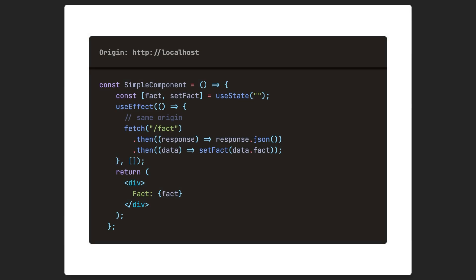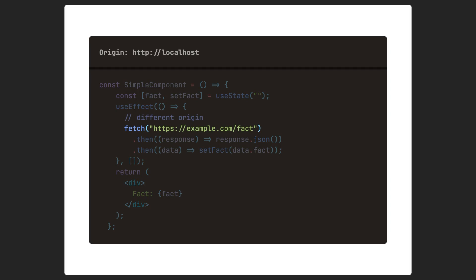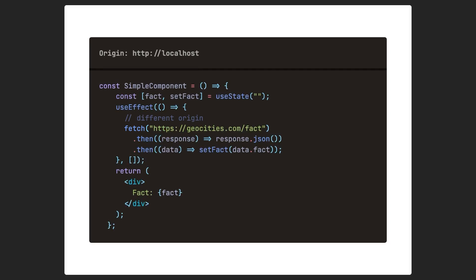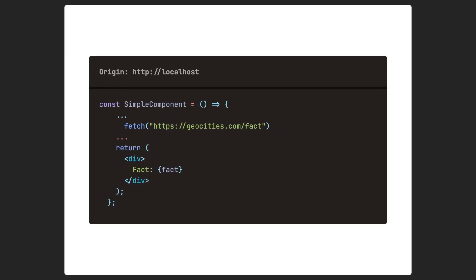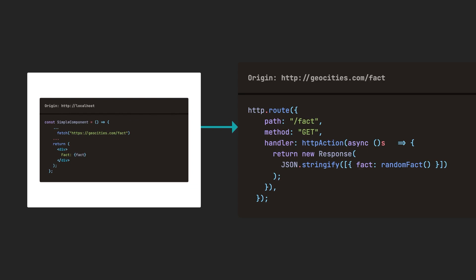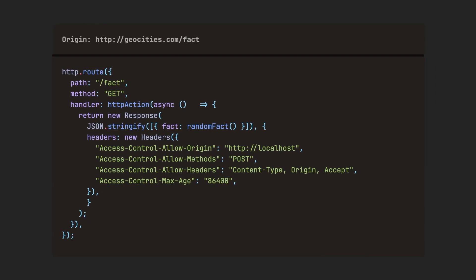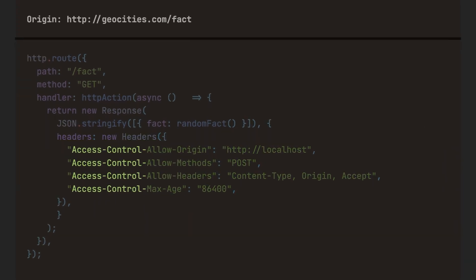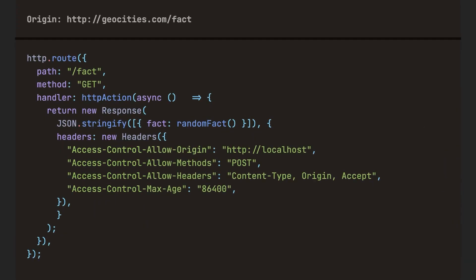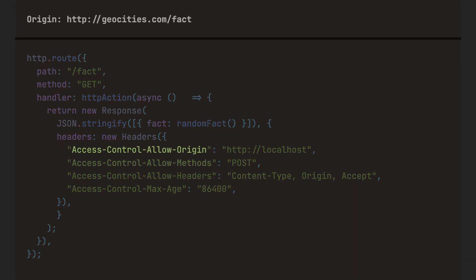The short version of CORS is that when browser-based JavaScript makes a fetch request to another origin, the server on the other end needs to let the browser know that this request is A-OK. The server does that by providing headers specific to CORS. CORS headers all start with Access-Control.